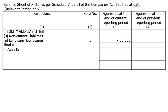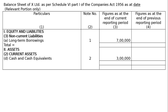On the assets side: current assets — cash and cash equivalents in Note 2 will be Rs.3 lakhs in the amount column. No total will be written as information is incomplete.